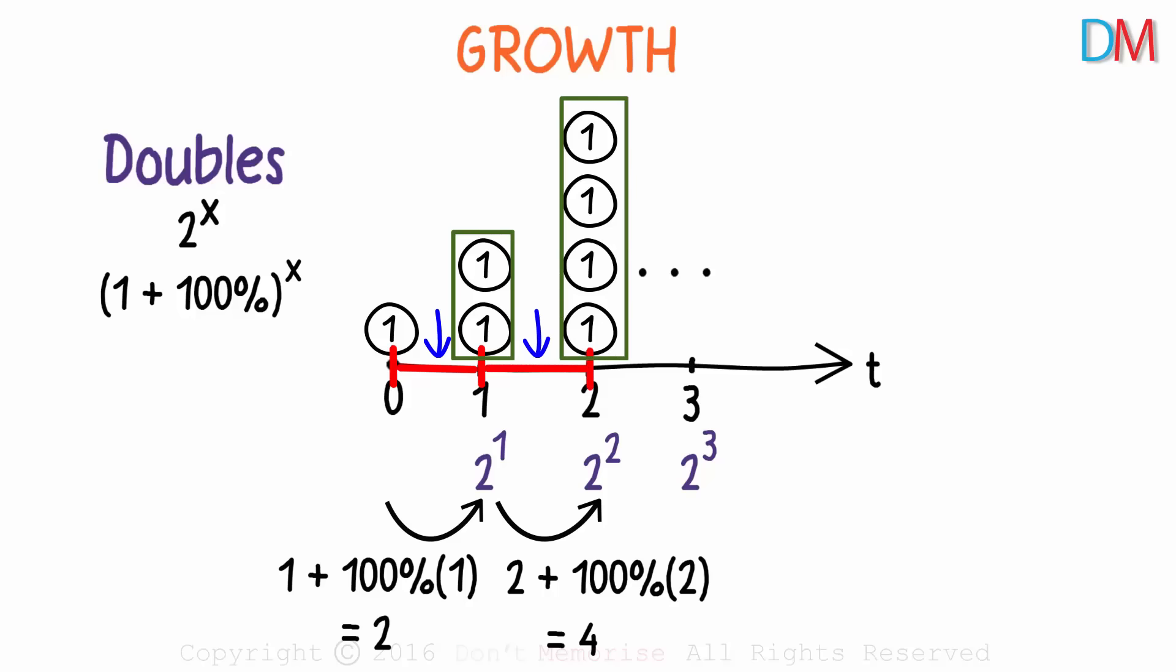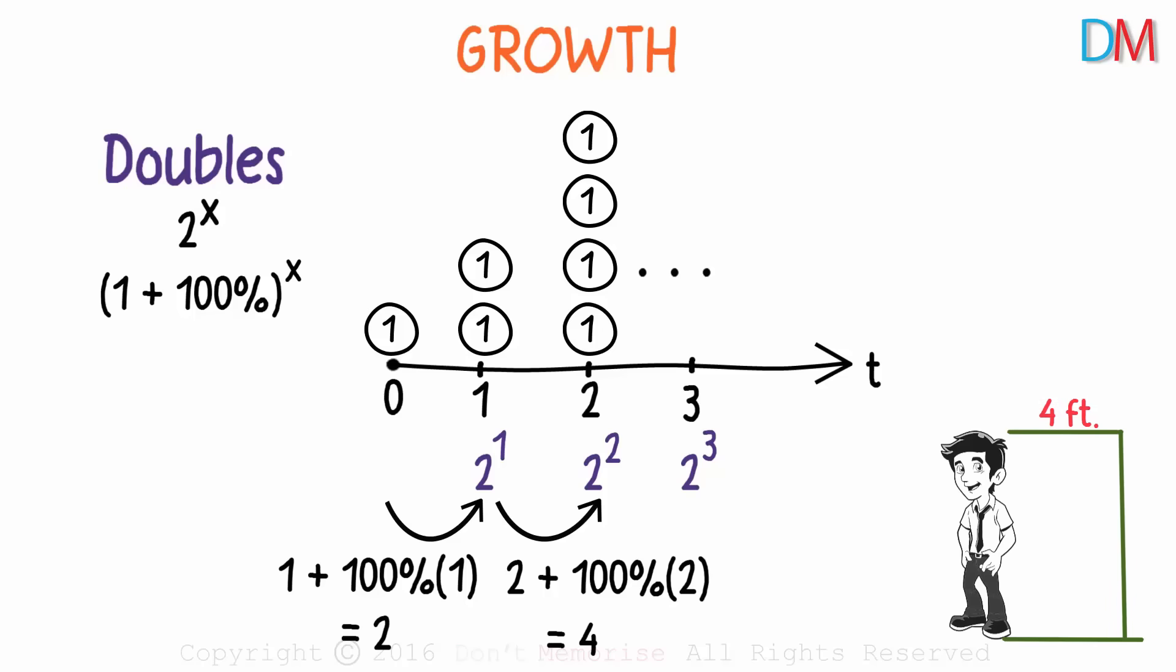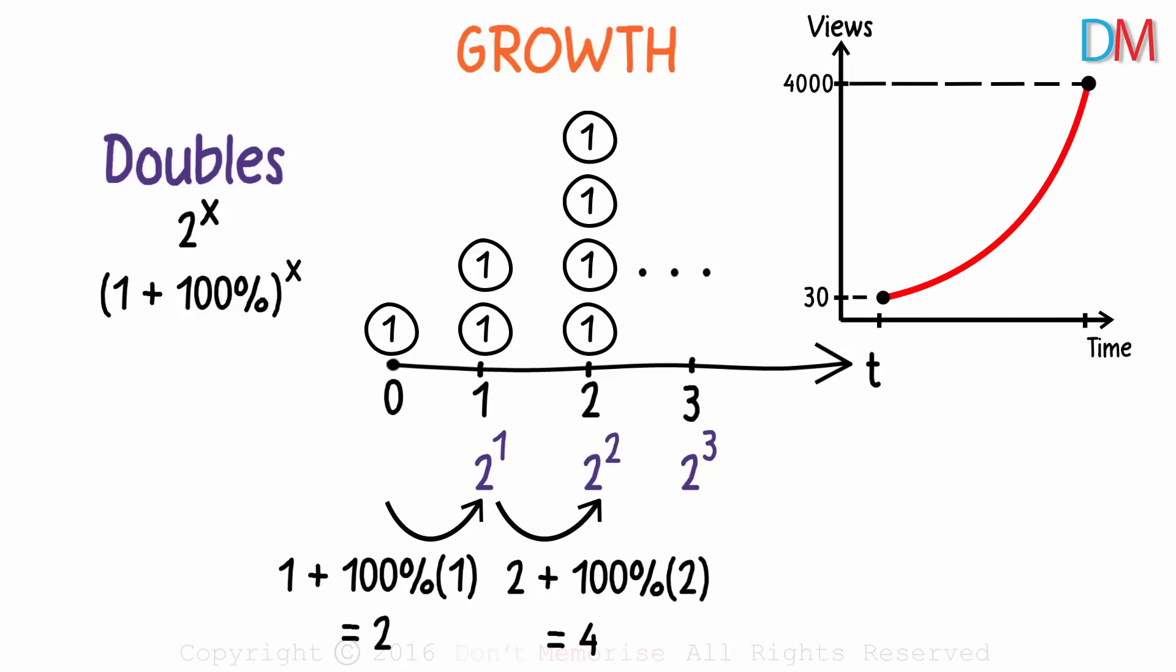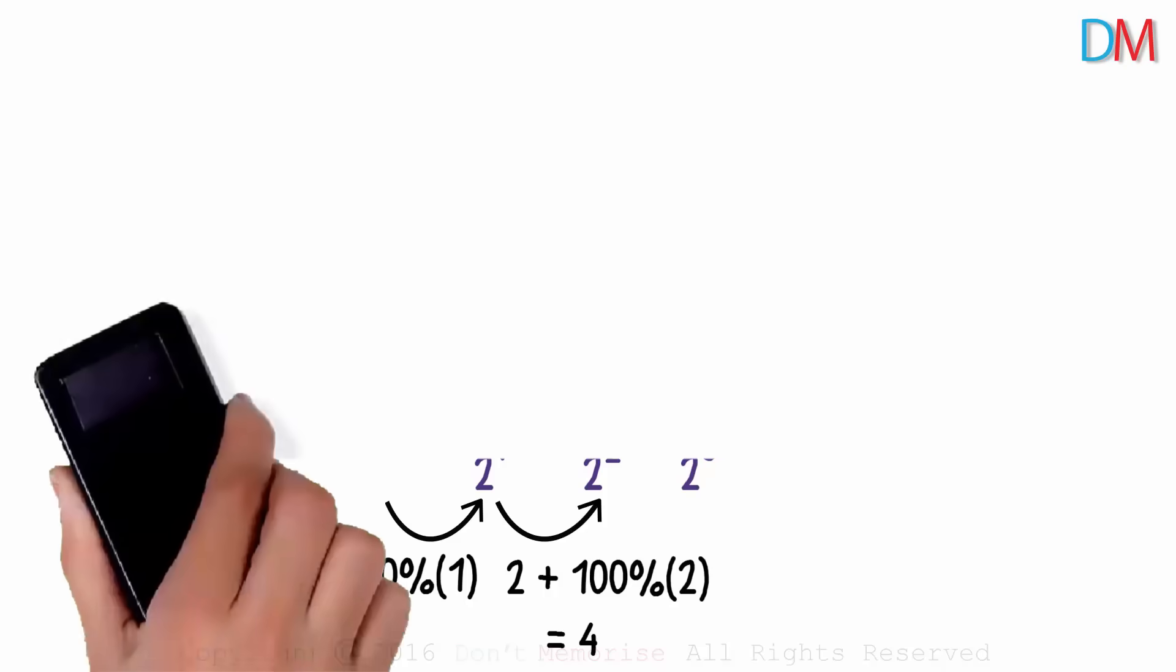But hey, that's not how nature functions. Everything or every kind of growth happens gradually. If your height today is four feet, you suddenly won't be five feet a year later. Your height gradually grows. When we started, we used to get around thirty views a day. And after a year, we started getting around four thousand views a day. It doesn't mean our view count just jumped one fine day. It gradually increased. So growth in nature is never really discrete or discontinuous. Let's see how it really works.